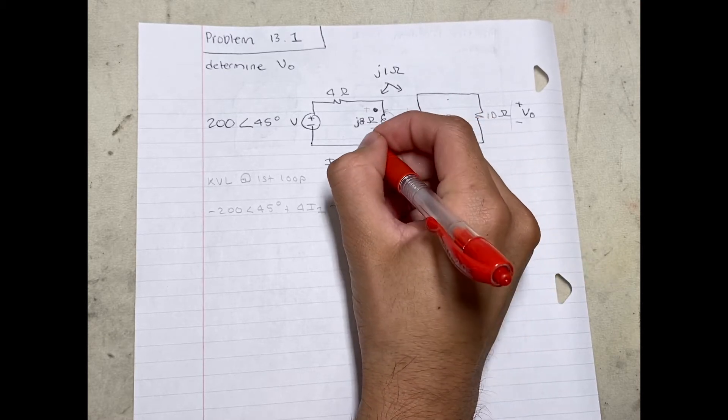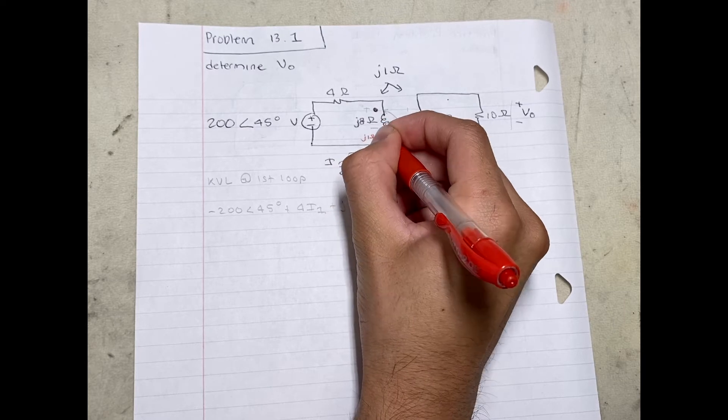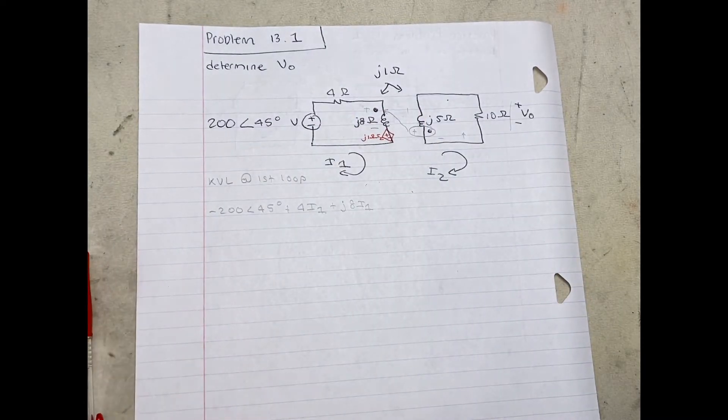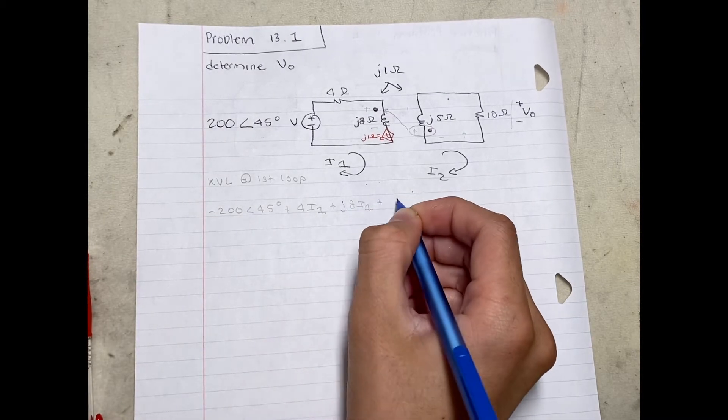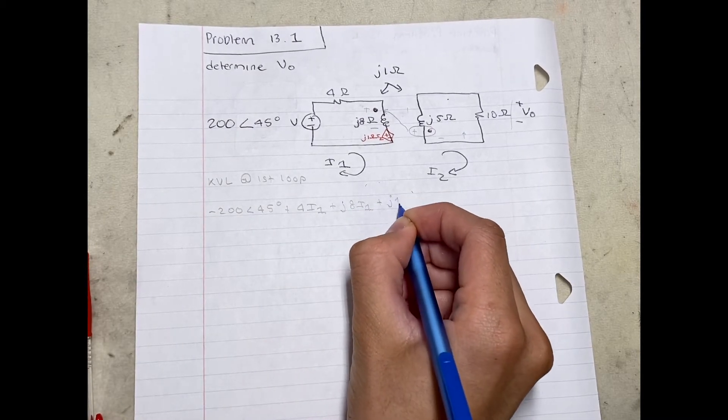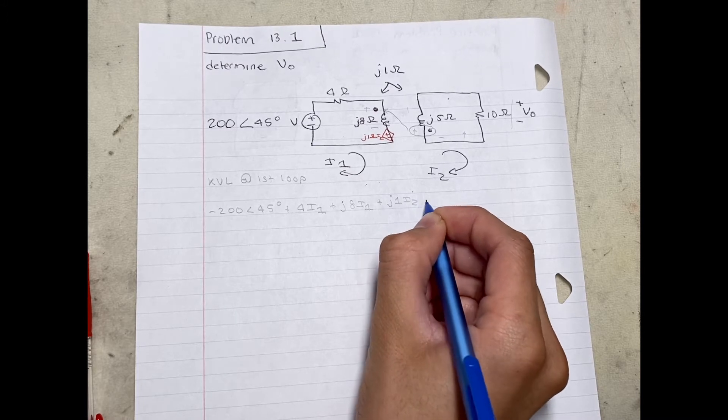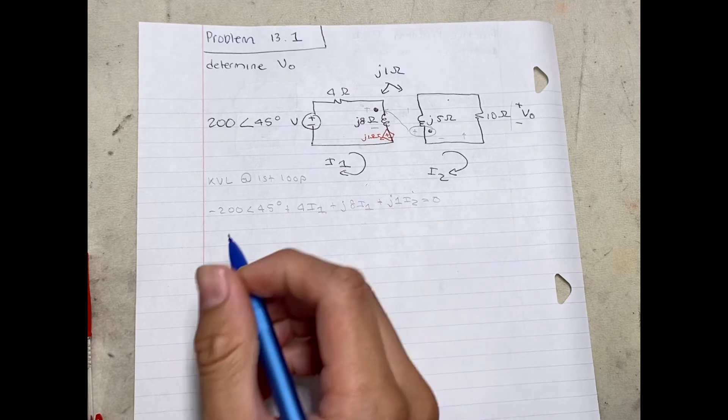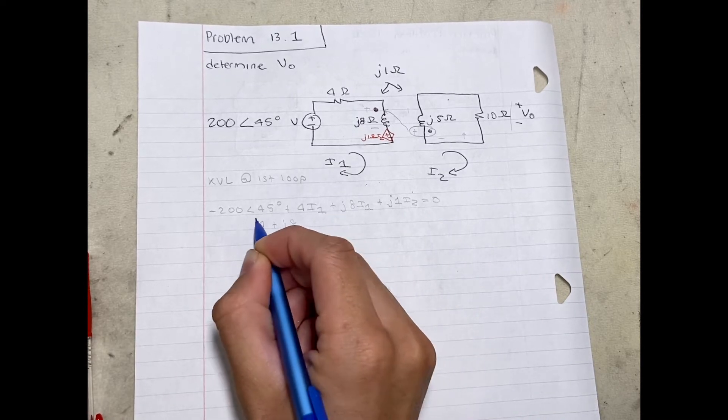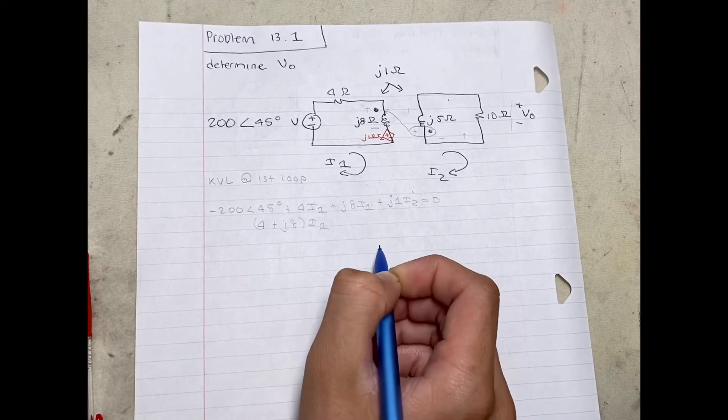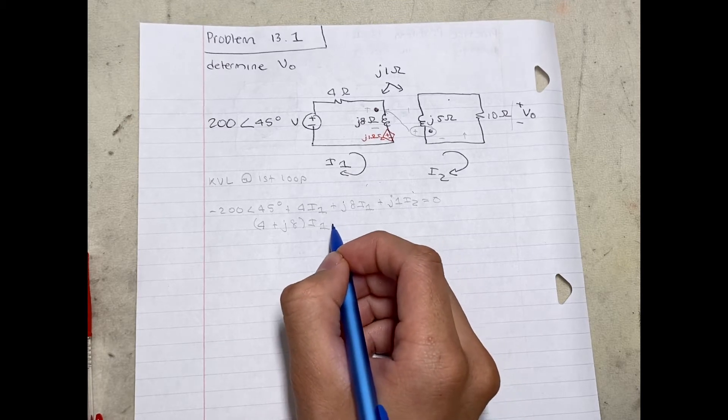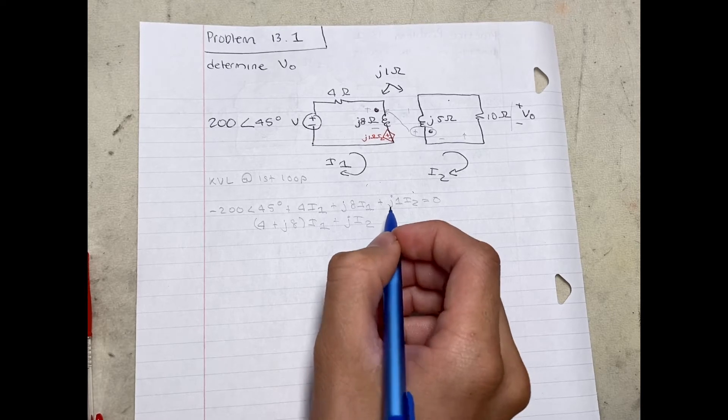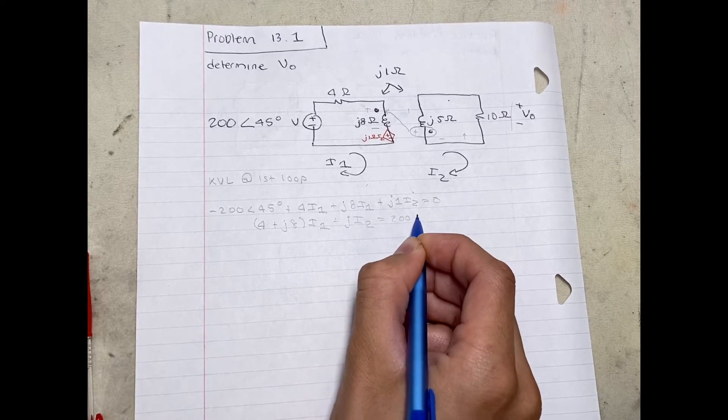The dependent voltage source will be J1 of I2. So now I'm going to add the J1 of I2 dependent voltage source and set it all equal to zero. Once I'm done, I'm going to simplify this equation, and I'm going to get (4 + J8) times I1 plus J of I2 is equal to 200 angle 45.